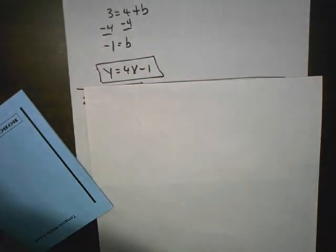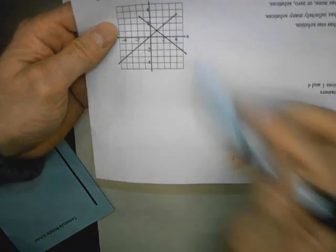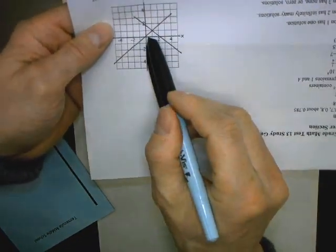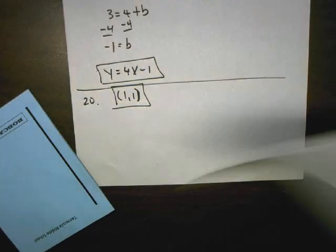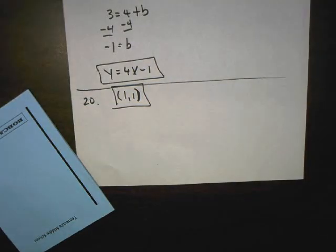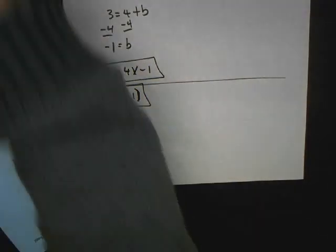Last problem, number 20: what's the solution to this system? That's just where the lines intersect. Going over 1 and up 1, my answer is (1, 1). That's the solution to the system. I hope the video helped you guys out.